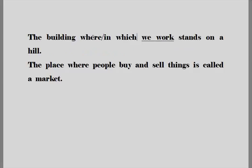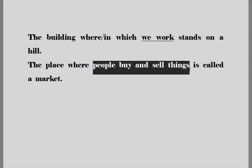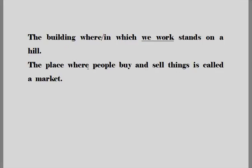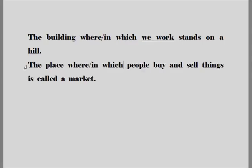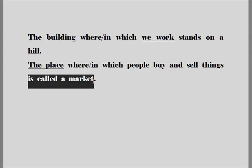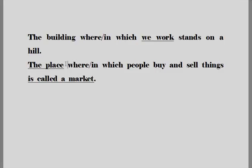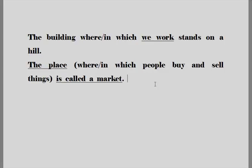두 번째 문장 보겠습니다. 'The place where people buy and sell things is called a market.' 선행사 the place가 관계사절 내에서 무슨 역할을 하는가? 사람들이 그 장소에서 물건을 사고 판다 — 그러니까 장소 개념이 되는 거죠. 여기서도 마찬가지로 where 대신에 in which를 쓸 수 있는 거죠. the place — [where people buy and sell things] — is called a market. 괄호로 묶어서 문장을 보시면 훨씬 더 쉽게 볼 수 있습니다. '사람들이 물건을 사고 판매하는 장소는 시장이라고 불린다.' 관계부사 where — 느낄 수 있겠습니까?